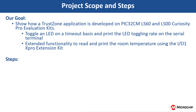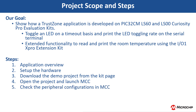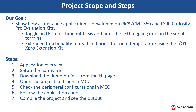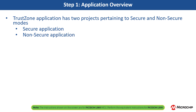To achieve this, we will show you the application development overview, set up the hardware, download the demo project from the kit page, open the project and launch MCC, check the peripheral configurations in MCC, review the application code, and then compile the project and see the output. A TrustZone application has two projects pertaining to secure and non-secure modes of PIC32CMLS60 or LS00 that work together on the same MCU and offer security isolation between the trusted and non-trusted resources in the device.